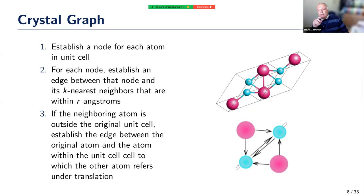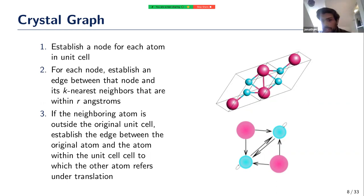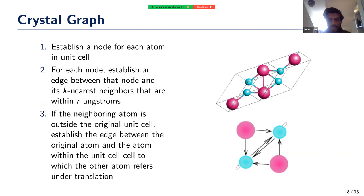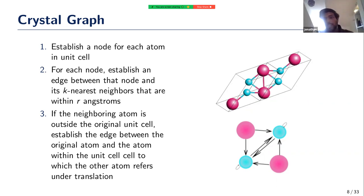On the question of whether edges distinguish different types of bonds chemically — covalent, ionic — no, they do not. The edges simply represent Euclidean distance. Bond definitions are somewhat fuzzy, and that information is not necessarily included in the input data. This is also the existing crystal graph representation, not our proposal. Our goal is to make a graph that is better without necessarily using more information — just the same information in a better way.